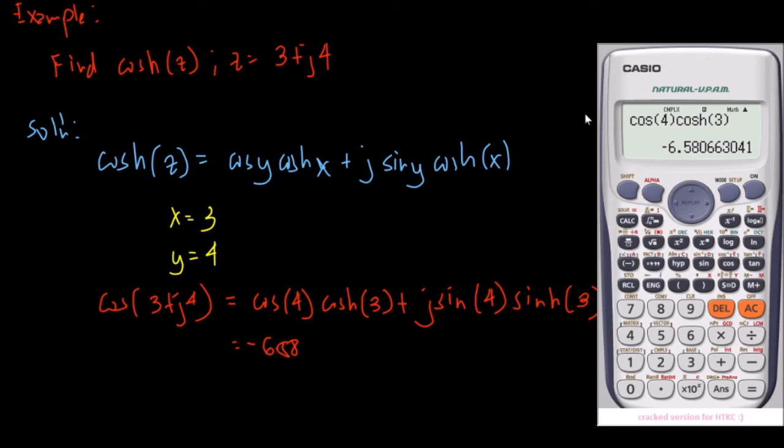Then we will edit this one. We will use now sine 4 and hyperbolic sine 3. So this is sine 4, then hyperbolic sine, hyperbolic sine 3. This is negative 7.58.